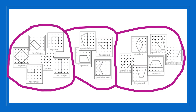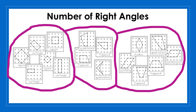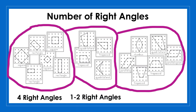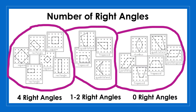I decided to sort the quadrilaterals by the number of right angles or square corners in the shape. The group on the left has four right angles — this includes rectangles and squares. The group in the middle has one or two right angles, including some quadrilaterals and trapezoids. Remember, not all quadrilaterals or trapezoids may have any right angles. We can see this in the group on the right, which has zero right angles and includes shapes we can name as parallelograms, rhombuses, trapezoids, and quadrilaterals.